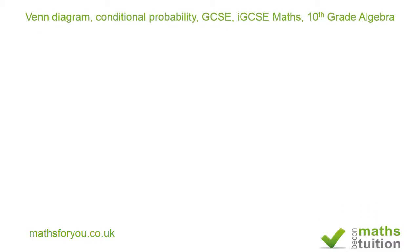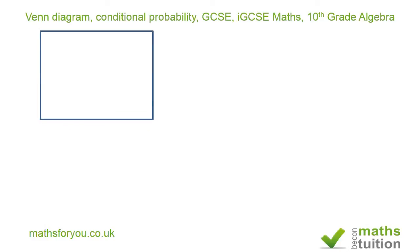Welcome to this short exercise on Venn diagram probability, which includes some conditionality as well. This is an IGCSE maths question. We're trying to investigate the playing habits of 43 students, looking at two sports: squash and badminton.